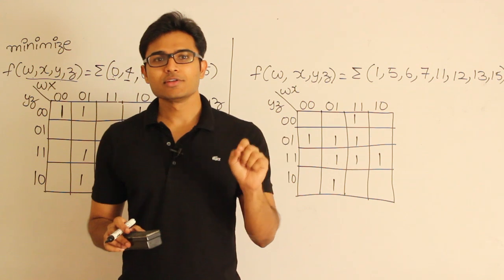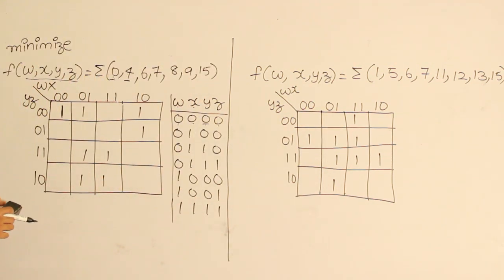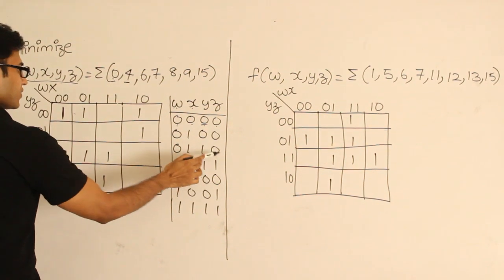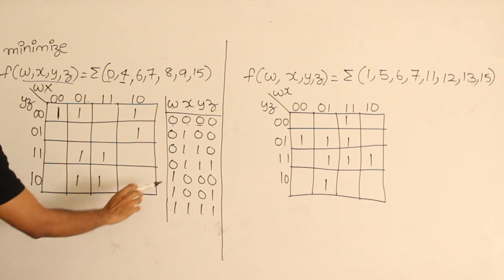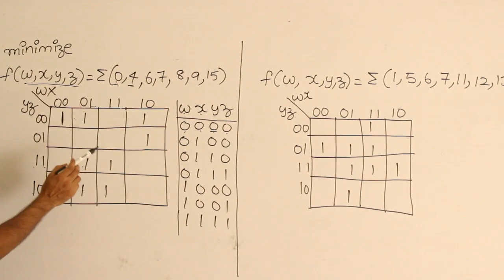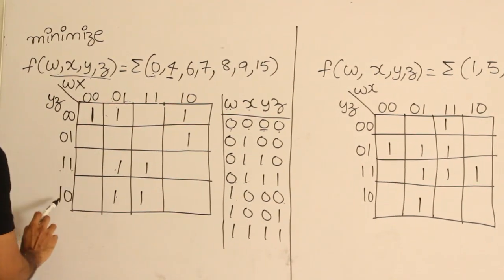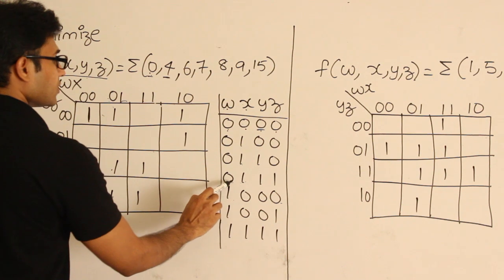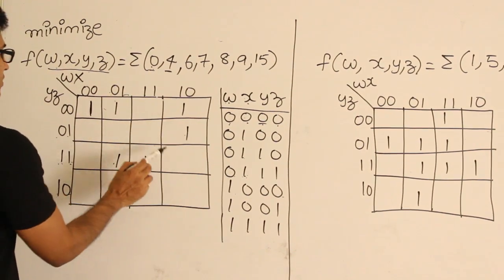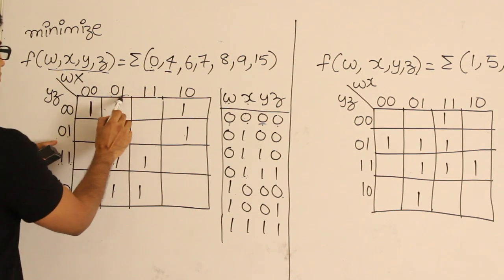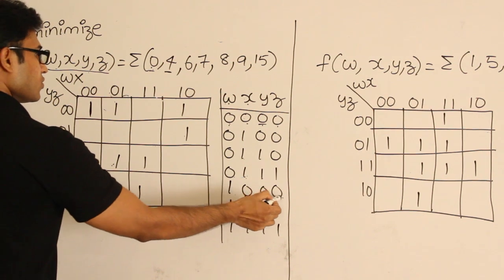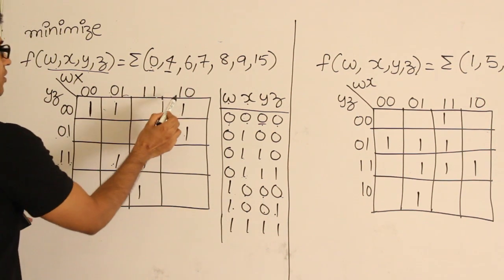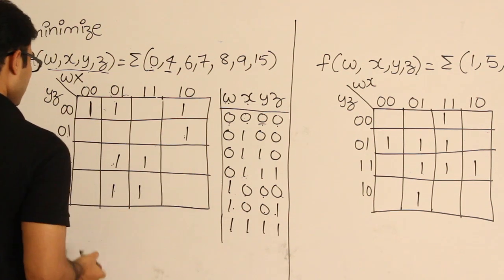Now, 0100 corresponds to this cell. Next, 0110 corresponds to this cell. Then 0111, which is 011, corresponds to this cell. Then 1000: W=1, X=0 is here, Y=0, Z=0 is here. Then 1001 is this cell, and 1111 corresponds to this cell. So now all the 1s are placed appropriately.